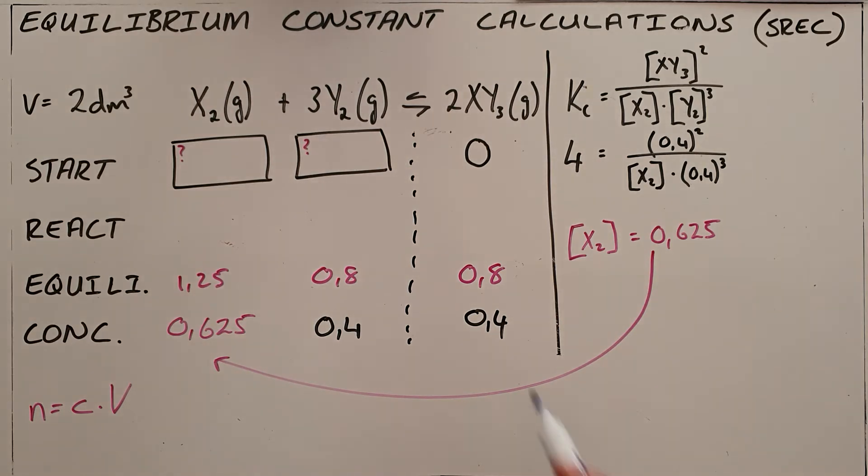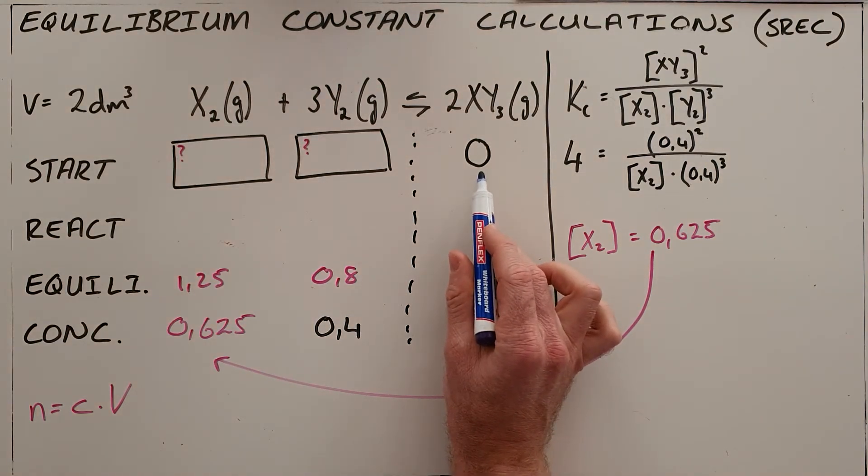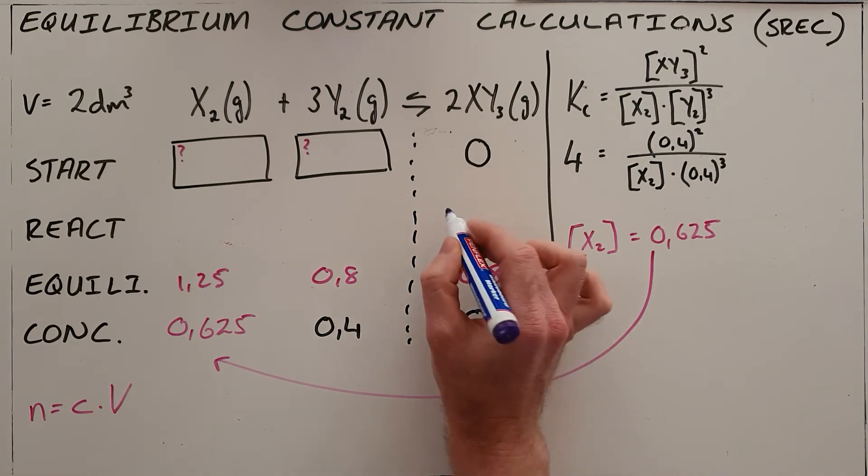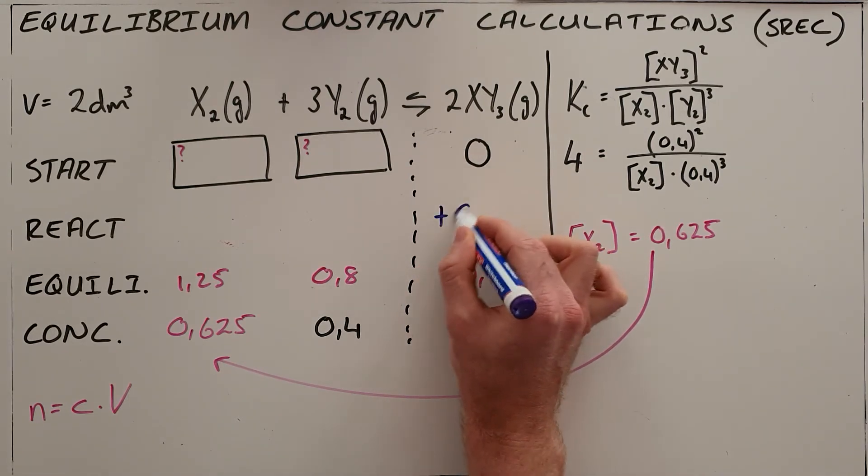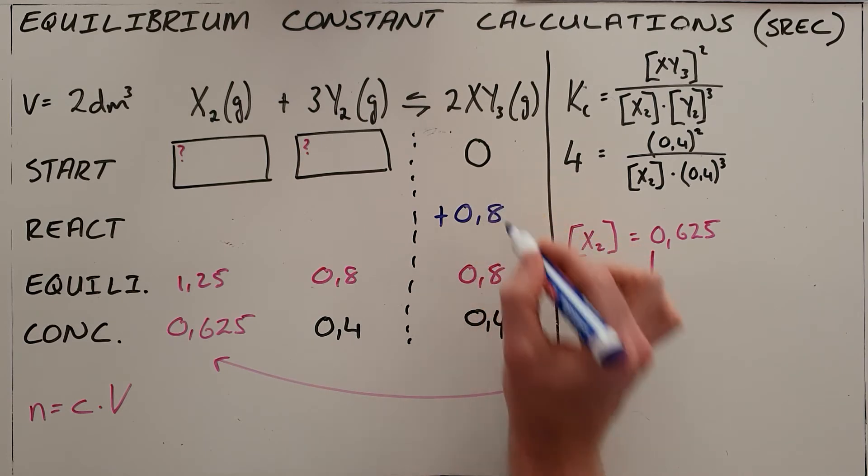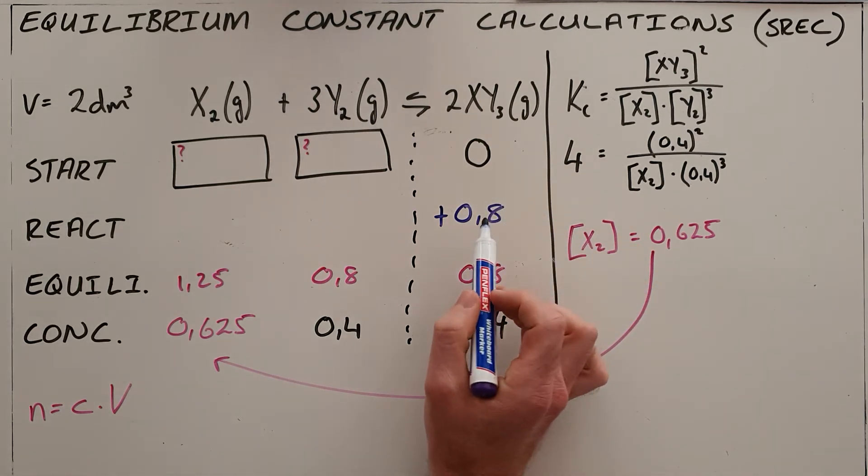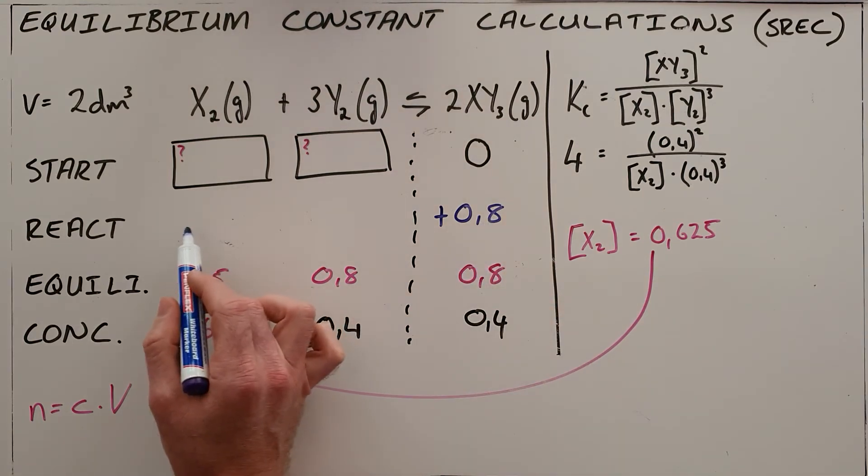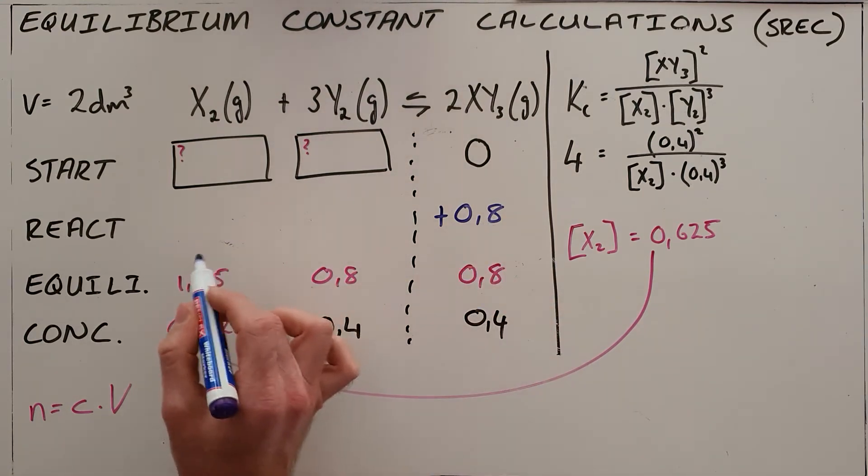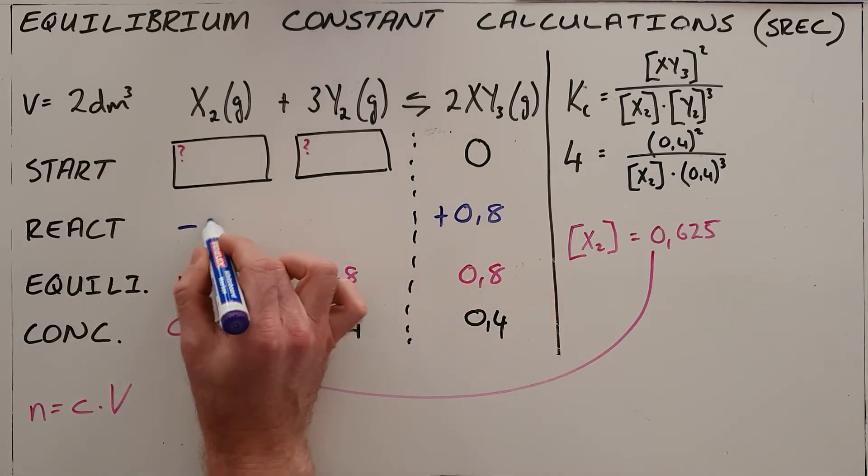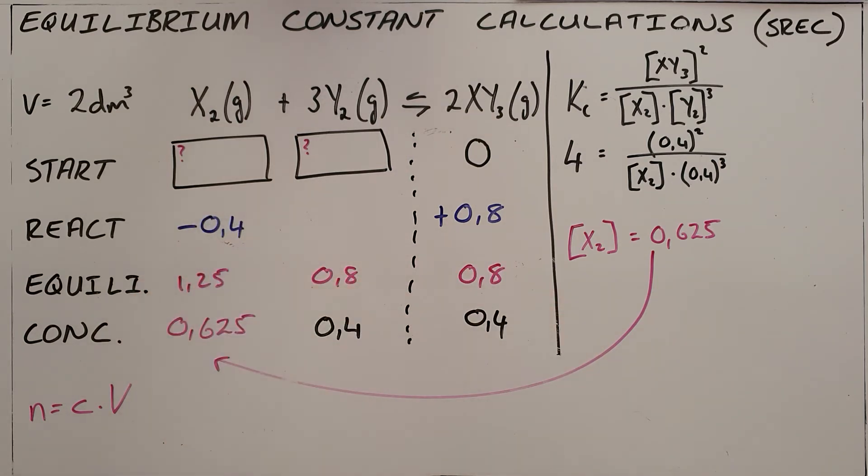Now since we know that we started with 0 moles of xy3 and ended with 0.8 moles, that means that we must have formed in the reaction 0.8 moles of xy3. We can then see that the ratio of xy3 to x2 is 2 to 1, which means that we must have used up half that amount—half of 0.8, 0.4—in this reaction.